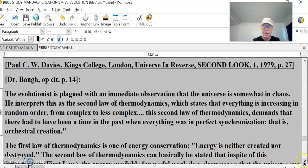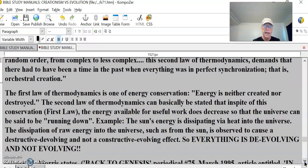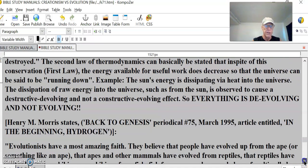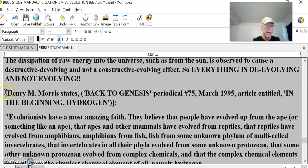The first law of thermodynamics is one of energy conservation. Energy is neither created nor destroyed. The second law of thermodynamics can basically be stated that in spite of this conservation, the energy available for useful work does decrease so that the universe can be said to be running down. Example: the sun's energy is dissipating by heat into the universe. The dissipation of raw energy into the universe such as from the sun is observed to cause a destructive devolving and not a constructive evolving effect. So everything is devolving and not evolving as can be observed.